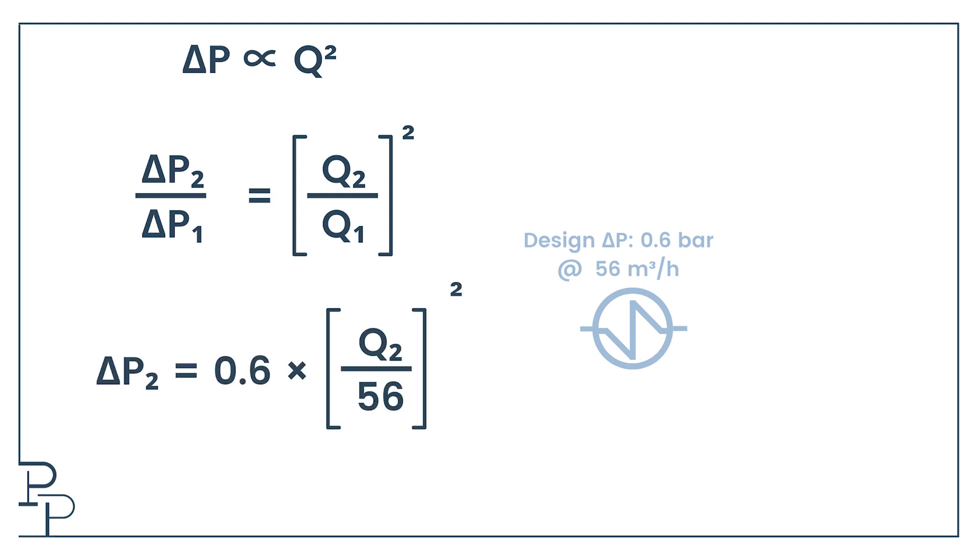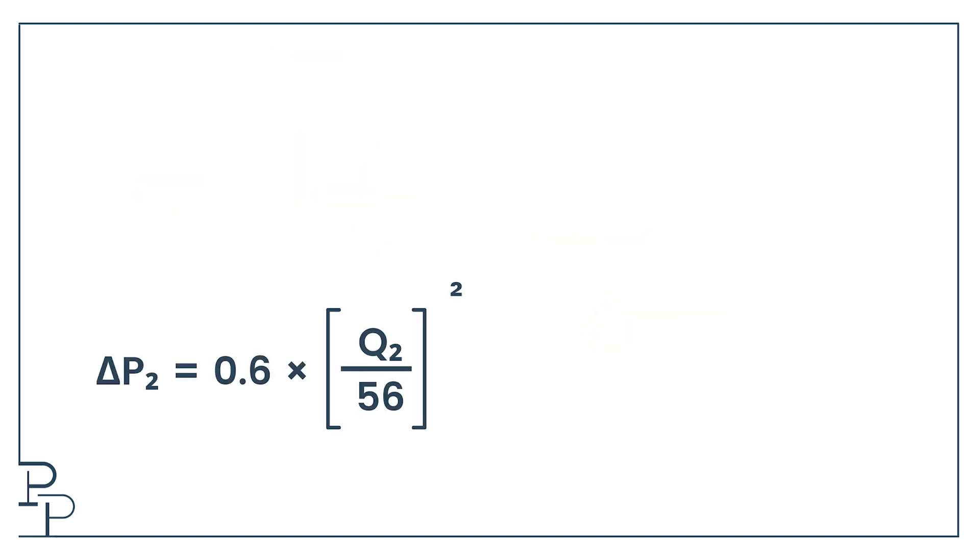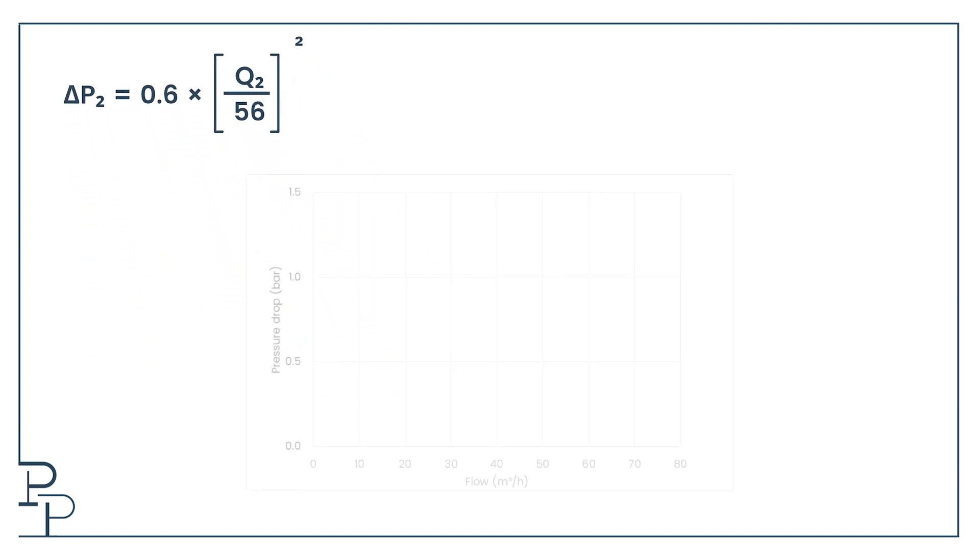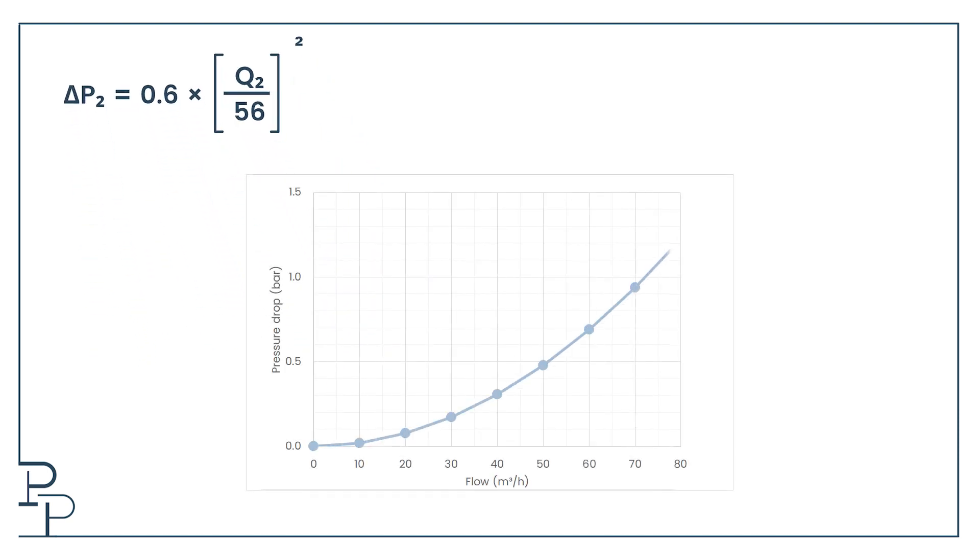Let's make up some values and say that this heat exchanger was calculated to have a pressure drop of 0.6 bar at a flow rate of 56 cubic meters per hour. Since I know that pressure drop is roughly proportional to the square of the velocity and hence the square of the flow rate, I can come up with the following equation. So if I know the design pressure drop and flow, I have a nice equation for the pressure drop through the heat exchanger. It might not be completely accurate at lower flows, but it's good enough if I have nothing else.